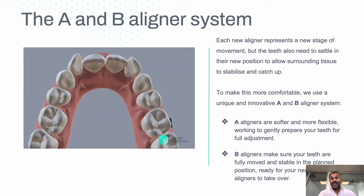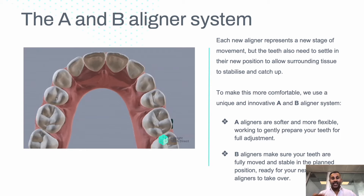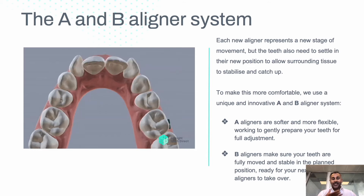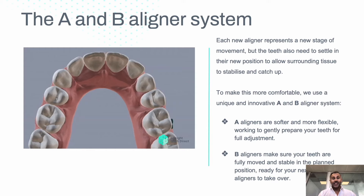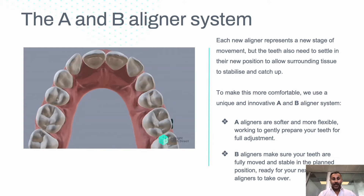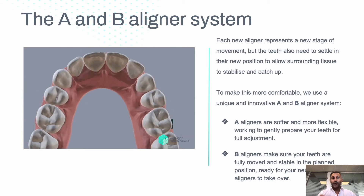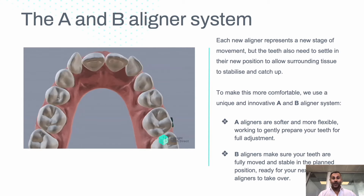To make things more comfortable, we have an A and B aligner system. The A aligners are more flexible, so they help it sit and stimulate more movement. The B aligners are stronger and help secure more movement. It's very important when doing this amount of expansion and movement that the teeth move in a systematic and careful way, so you have to hold the teeth in a new position.